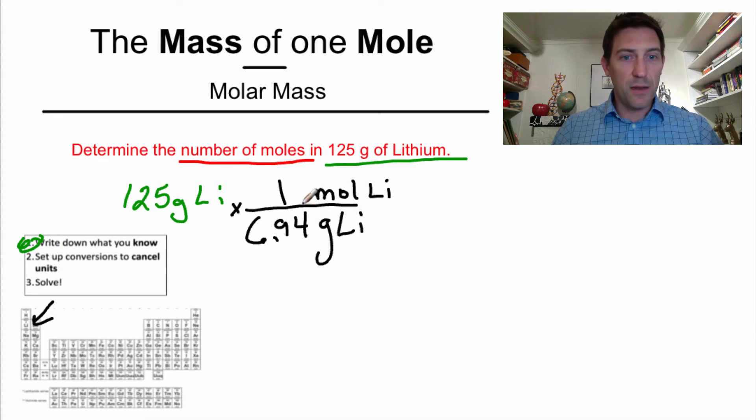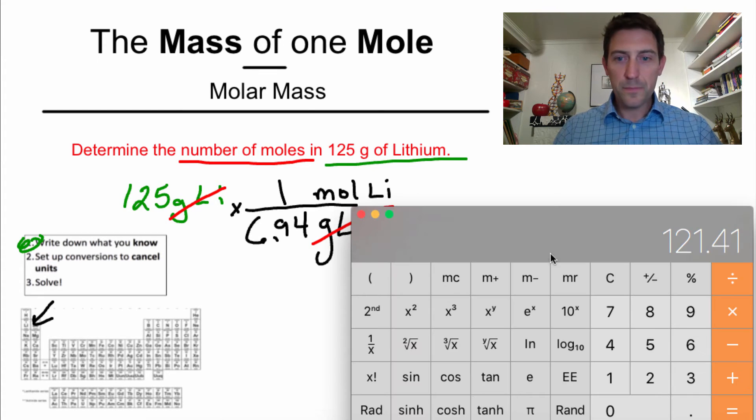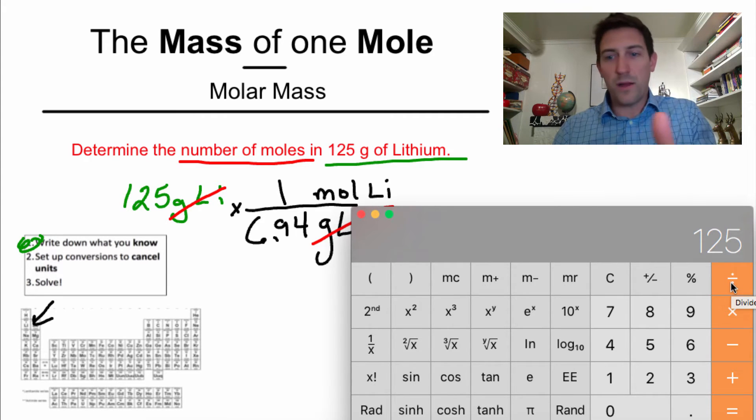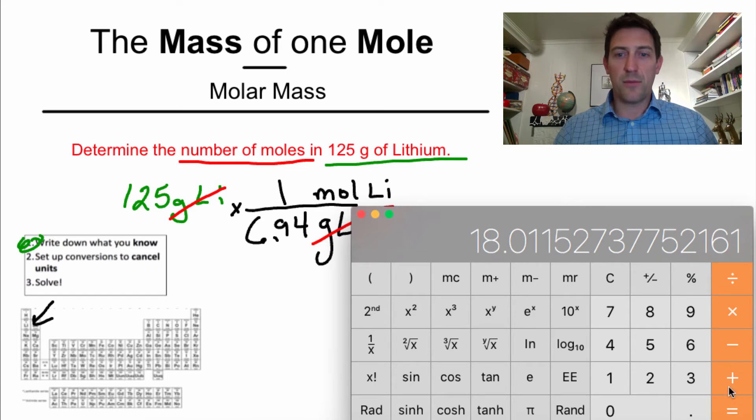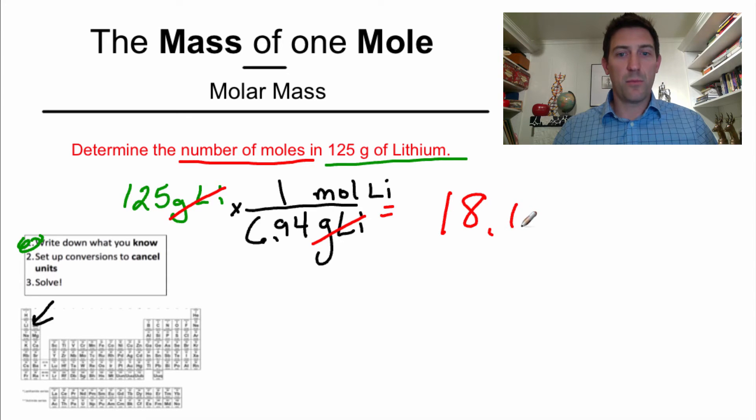And now look, I'm in moles of lithium and that's what I wanted my answer in. This is going to cancel. This is going to cancel. I take out my calculator. Clear. Clear it out. I type in 125 times one, but I don't need to do that. So I'm going to go straight to divided by 6.94. Hit the enter button and I've got 18.01. So my answer is 18.01. And what are my units? Moles of lithium because that's all I have left. And that is what I wanted my answer in.